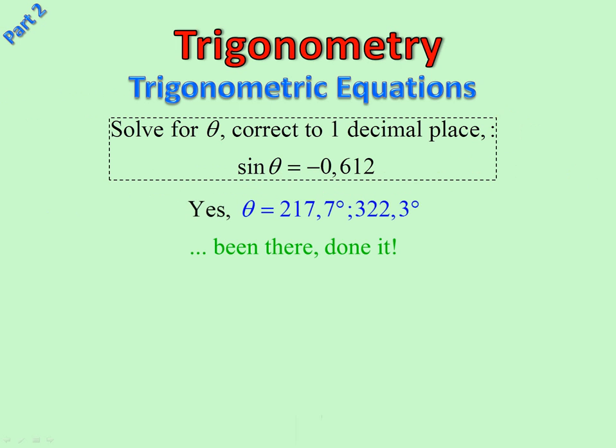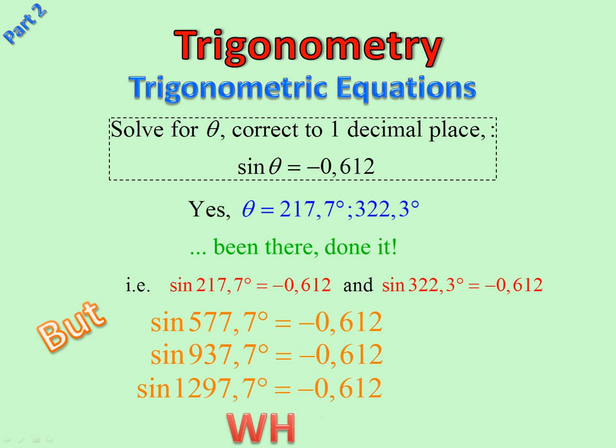Well, there's our answer, been there, done it. So that means sine of that is that and sine of that is that. But if you use your calculator you'll find sine of these all also gives you that same answer. Why is that?